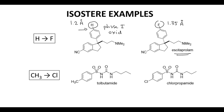In the second example, we can replace a methyl group with a chlorine. Tolbutamide, which is our bottom left structure, is an anti-diabetic. It contains a methyl group that undergoes phase one oxidation — again, a metabolic soft spot. If we replace the methyl with a chlorine, you can't perform oxidations on the chlorine, so this actually changes the half-life.